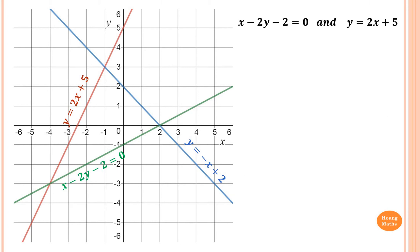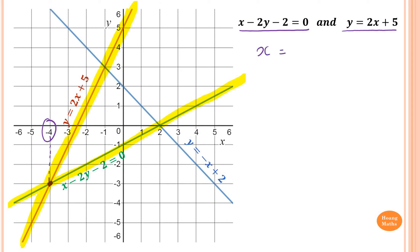The point of intersection between x - 2y - 2 = 0 and y = 2x + 5. First, we identify the lines. x - 2y - 2 = 0 is this line here, and y = x + 5 is this line here. The point of intersection is here. So x = -4, and looking across horizontally, y = -3.